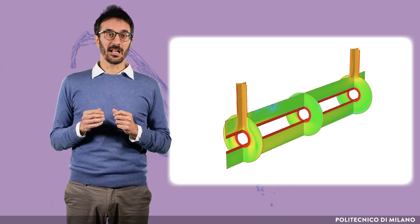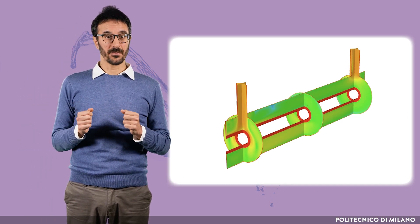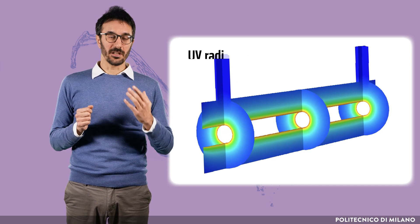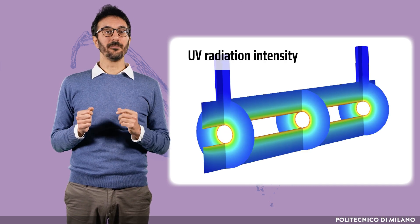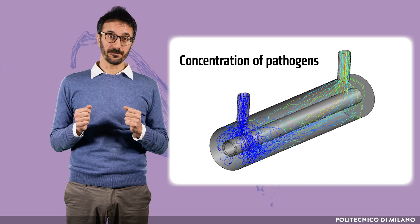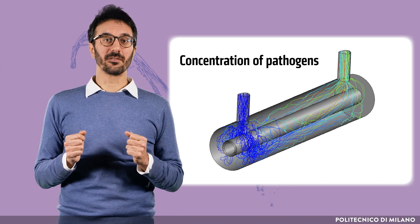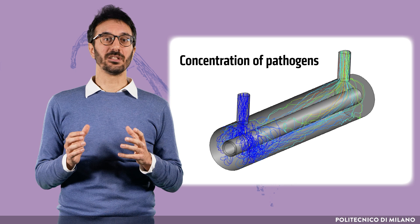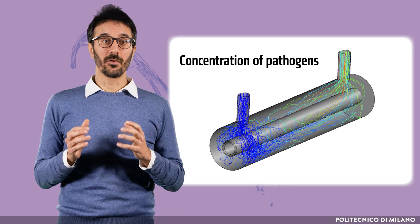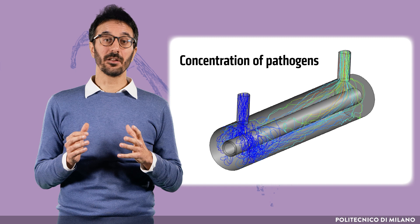The modeling results for the reactor operated at steady state are shown. You can see the water velocity, the UV radiation intensity, and the concentration of pathogens inside the reactor. These are all the elements required for a comprehensive assessment of process performance and, ultimately, for the optimization of reactor design and operation. It is up to you to decide what to do.